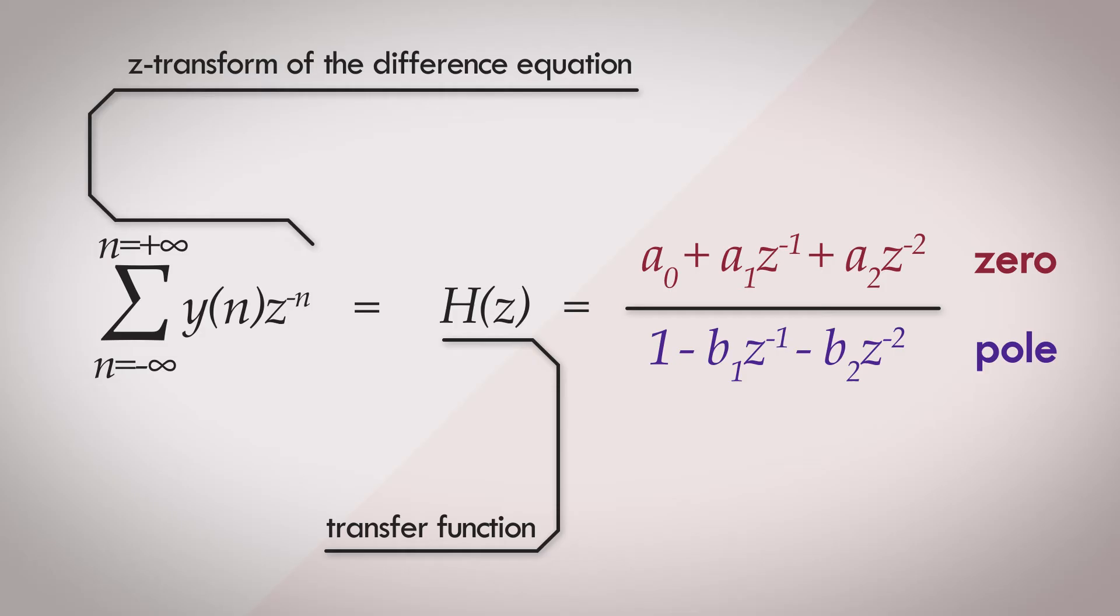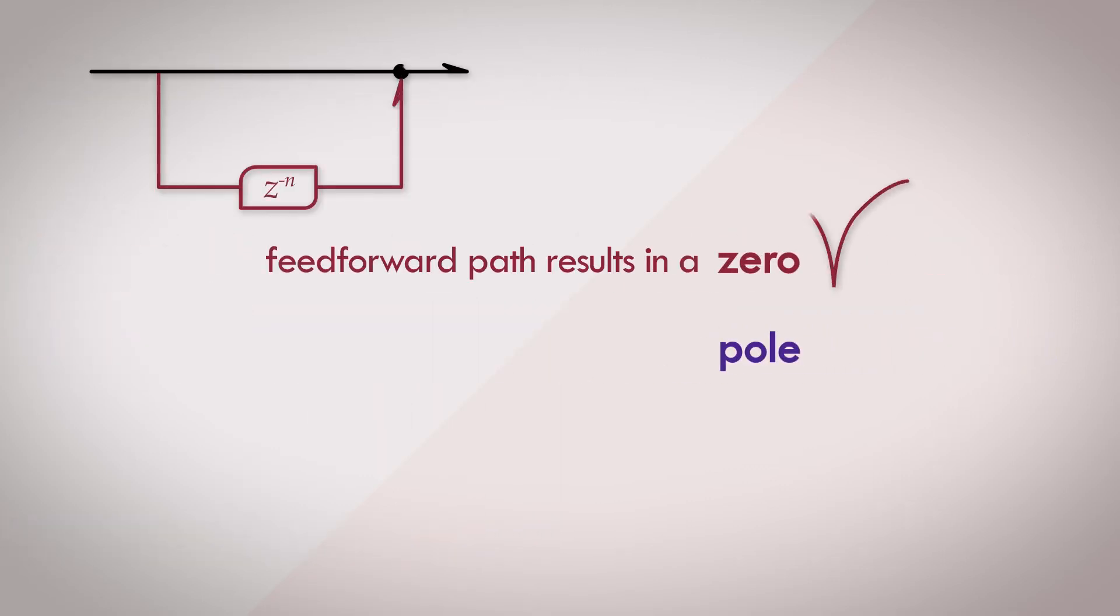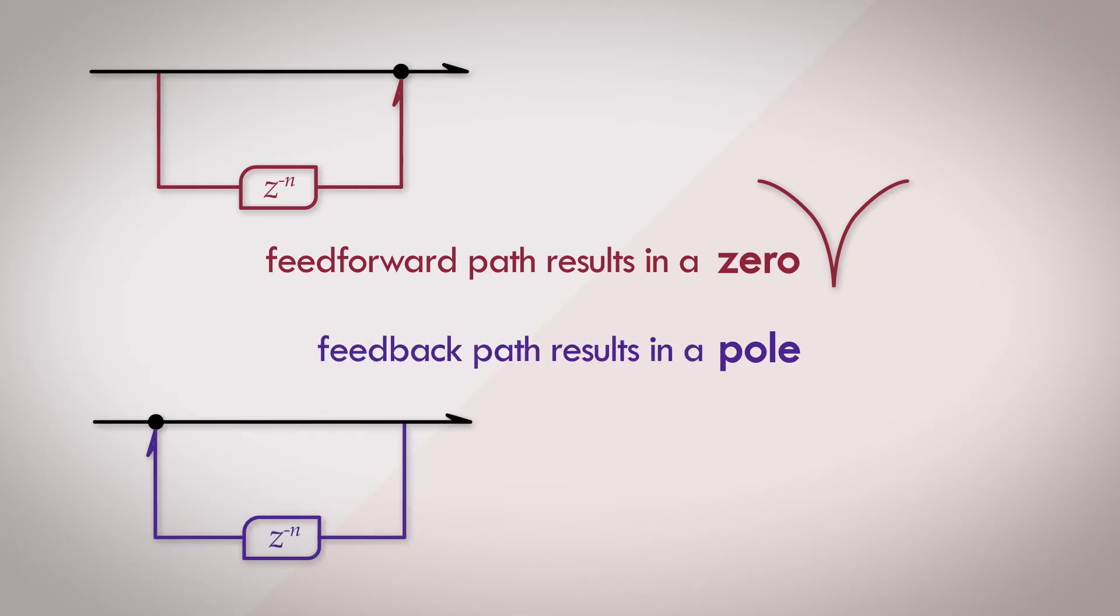But listen, I won't be going over any of this in this series. But as a general rule of thumb, feedforward paths result in one or more zeros in the frequency response, and feedback paths result in one or more poles in the frequency response. The higher the order of the filter, the higher the number of zeros, meaning that more frequencies can be driven to zero simultaneously.